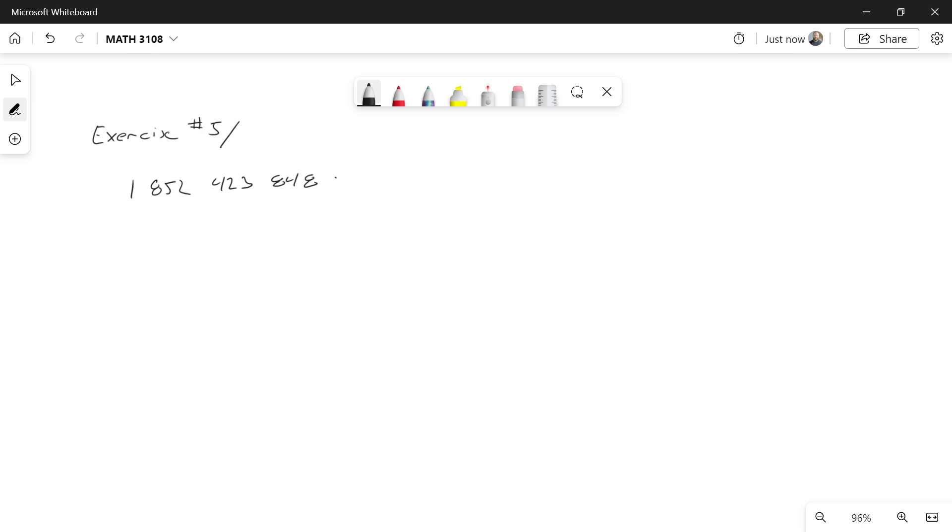So the first thing that I know is this number is, in fact, even. So if it's even, I can divide it by 2, and 2 is a prime number. So this is 2 times 926,211,924. And again, noticing that what's in here is also even. So I could factor out another 2. So I could write this as 2 squared.